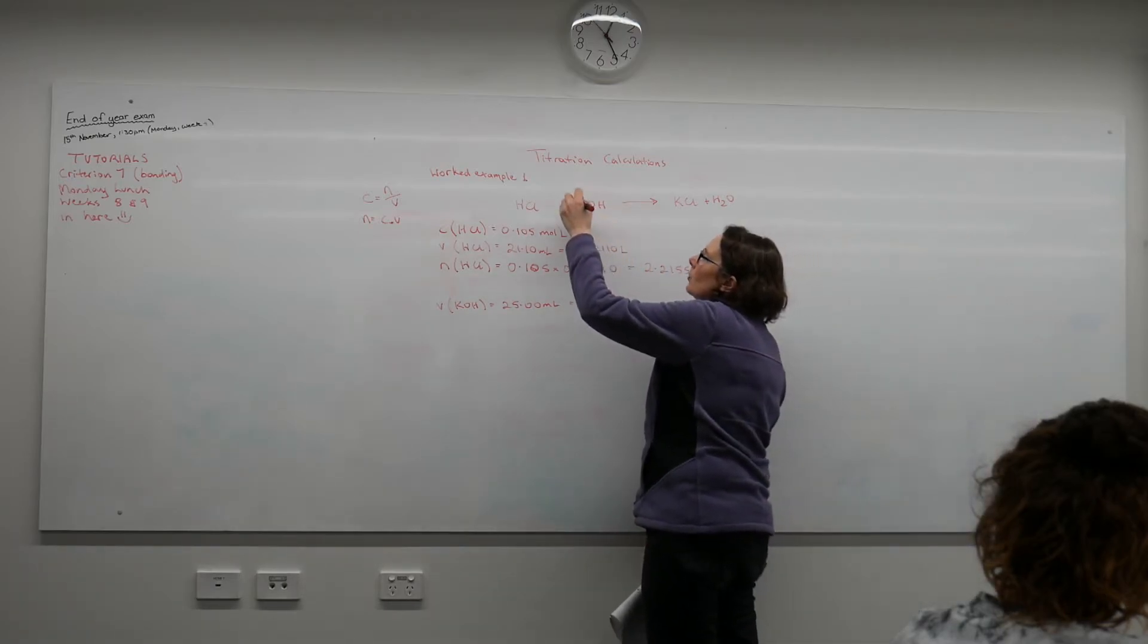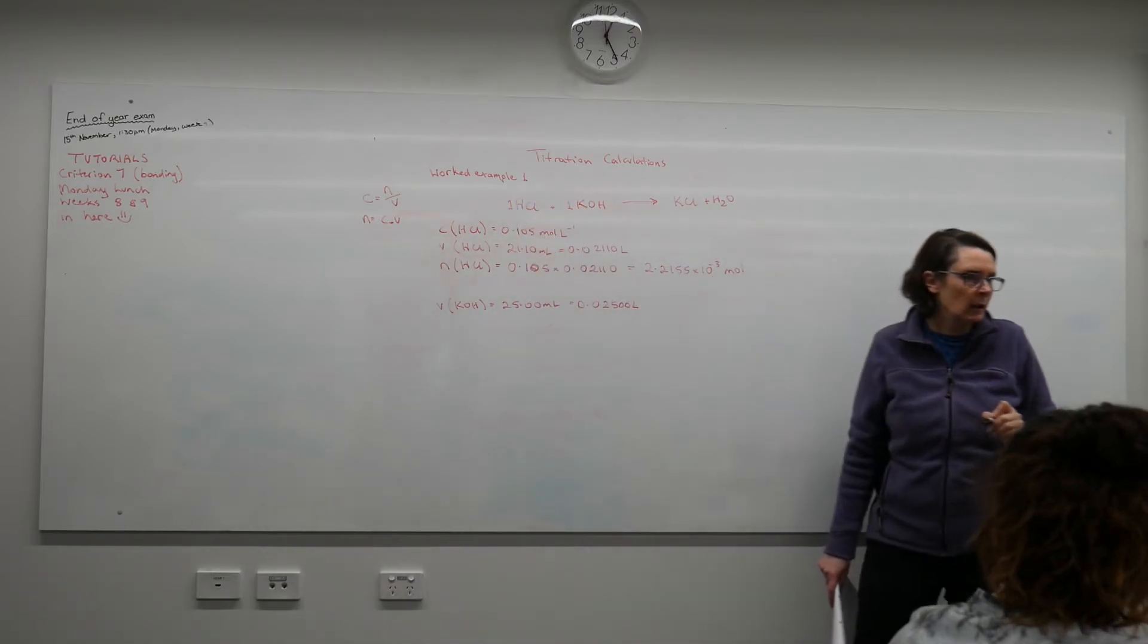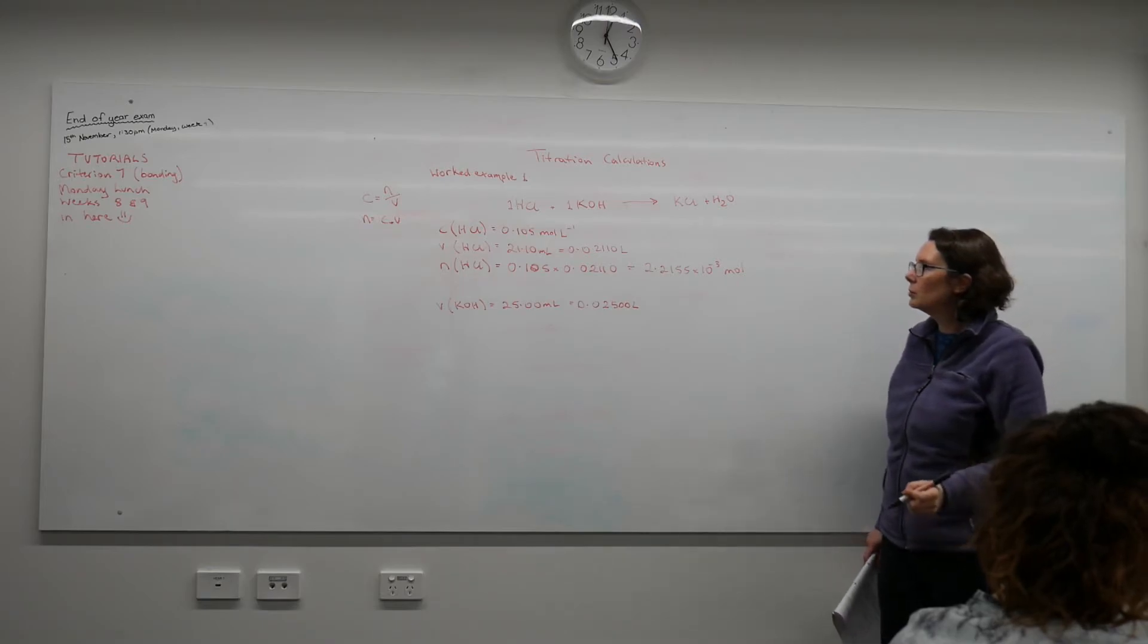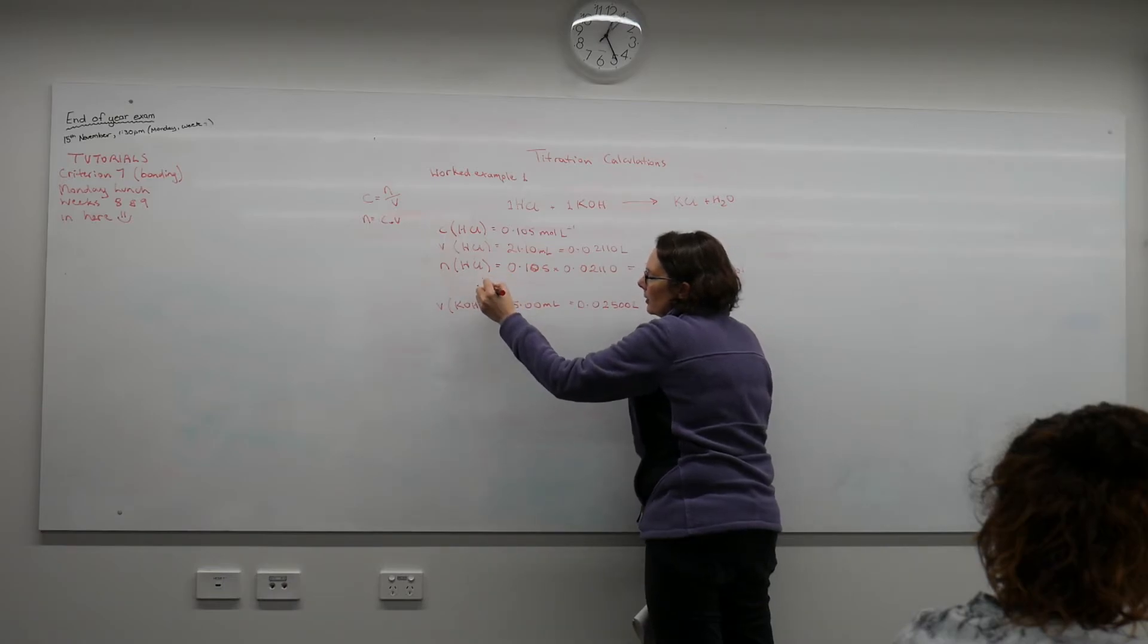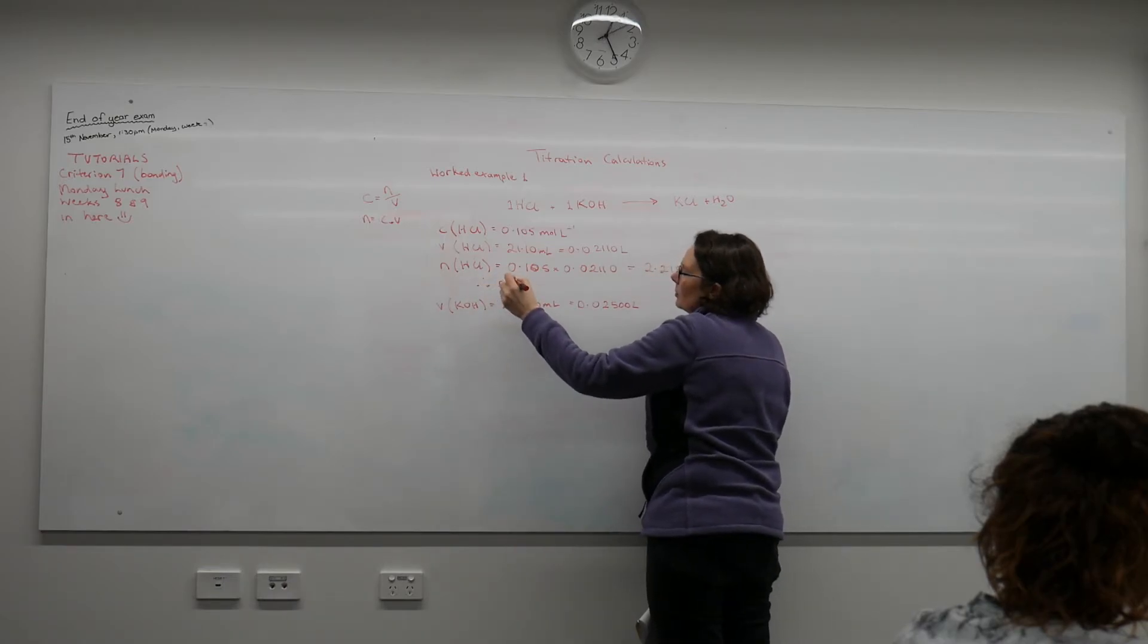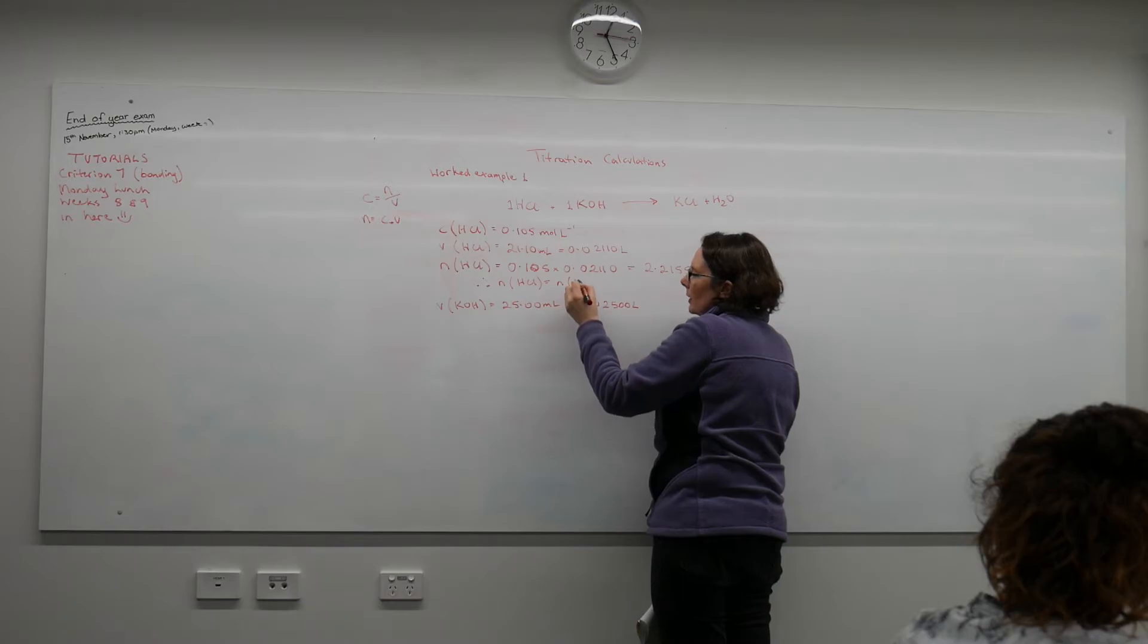But our reactants are in a one-to-one ratio here. We don't write the ones because we're lazy, but they are in a one-to-one ratio—that's a balanced reaction. So I can say that therefore, my moles of HCl is equal to my moles of KOH.